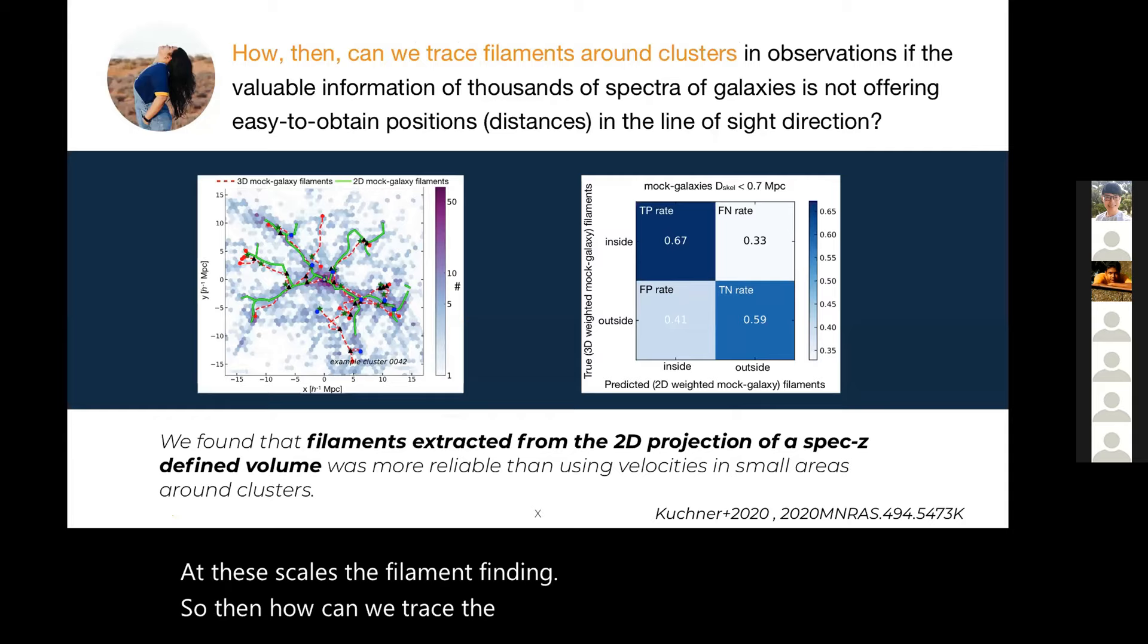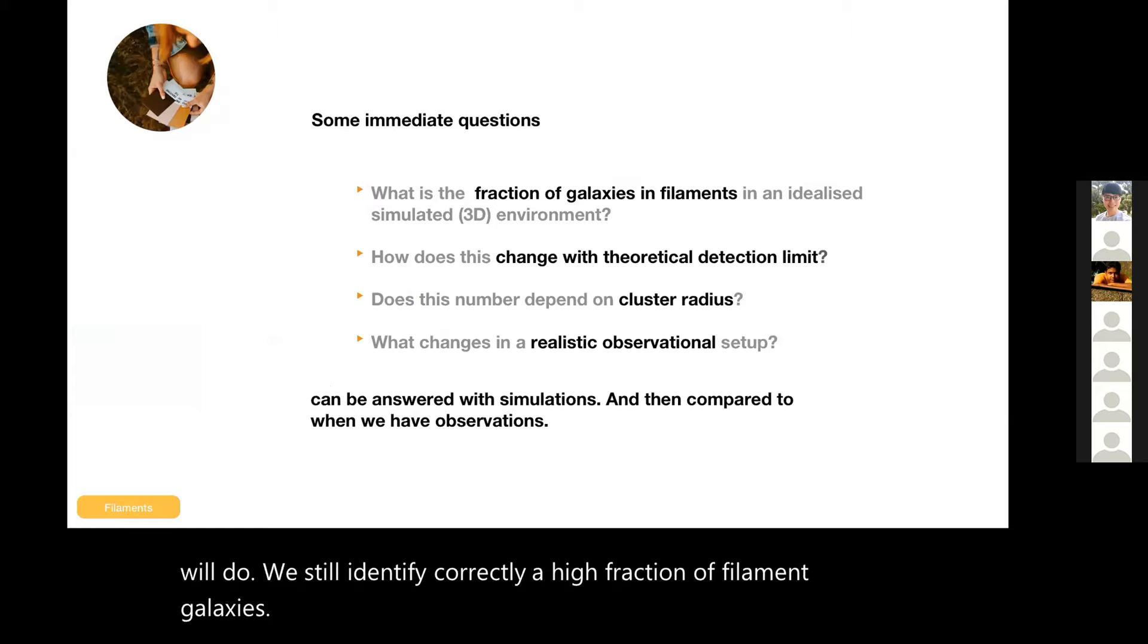So then how can we trace the filaments around the clusters? One option is to define the volume really well around the cluster and then just use the 2D projection for the filament finding. We do have the spectroscopic redshift so we can throw away background galaxies. So this is what we will do. We still identify correctly a high fraction of filament galaxies.